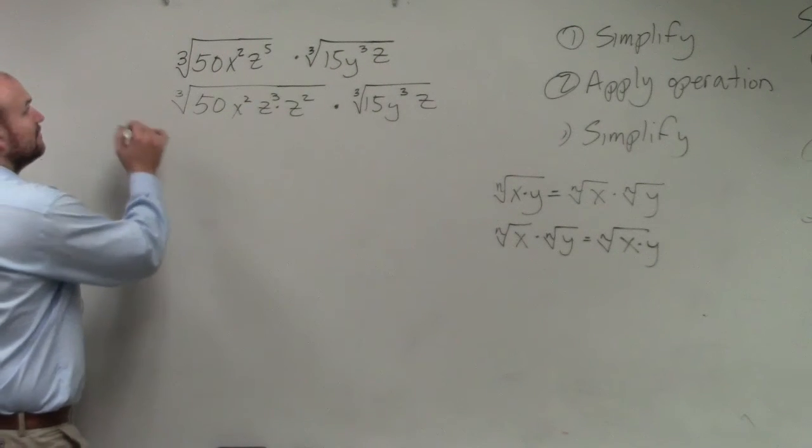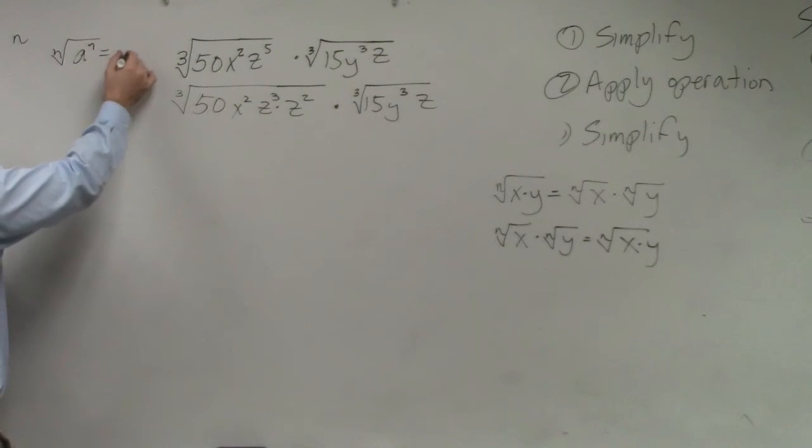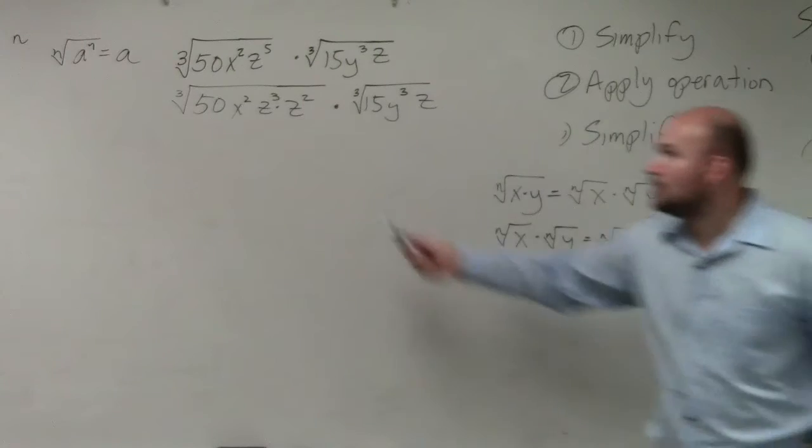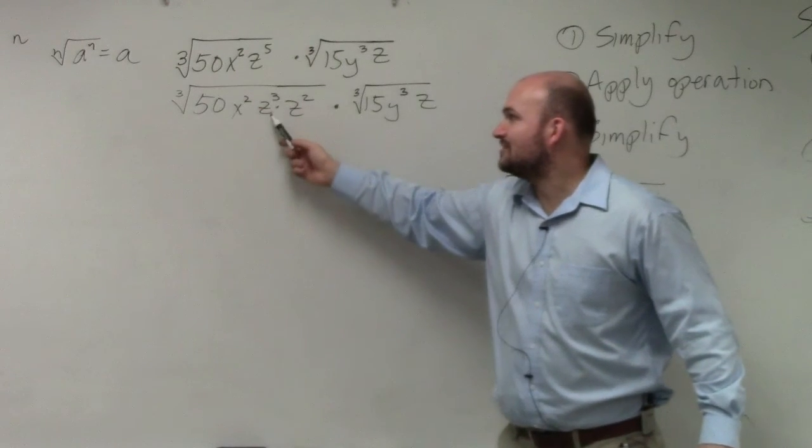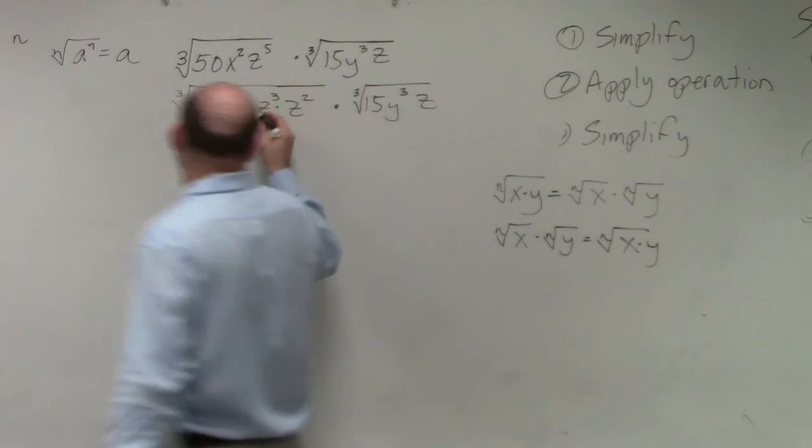So does everybody remember the identity element? nth root. Can I see this? There I go. So the nth root of a to the n equals a. Correct? The cube root of z cubed is going to equal z.